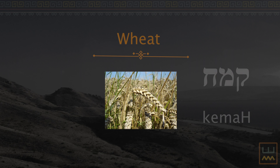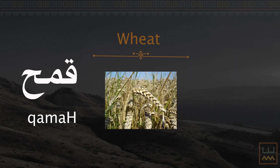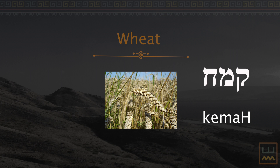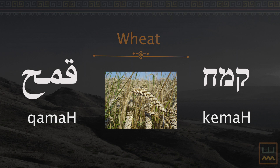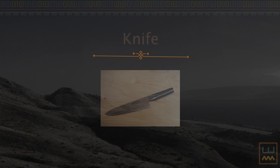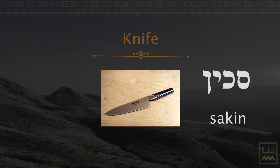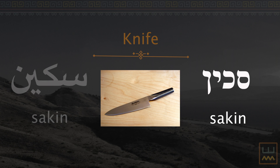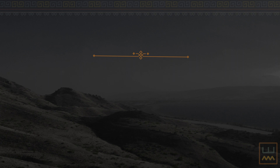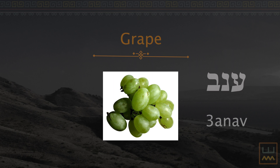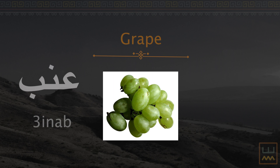Flour: Kemah (Hebrew), kamah (Arabic). Knife: Sakine (Hebrew), sakine (Arabic). Grapes: Anav (Hebrew), anib (Arabic).